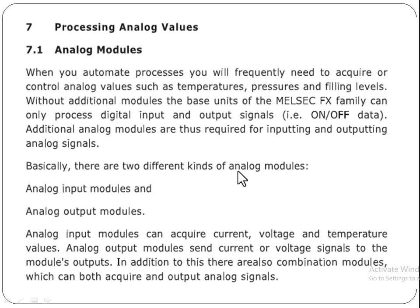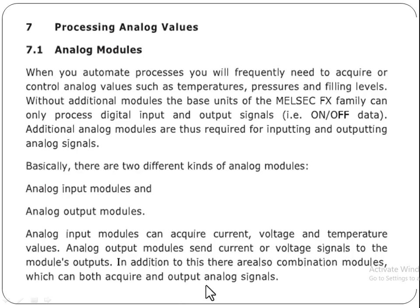There are two different kinds of analog modules: analog input modules and analog output modules. Analog input modules can acquire current, voltage, and temperature values. Analog output modules send current or voltage signals to the module's output. In addition, there are also combination modules which can both acquire and output analog signals.